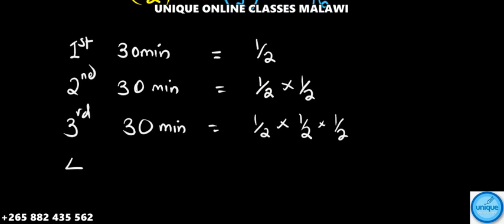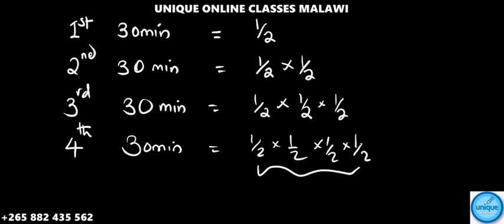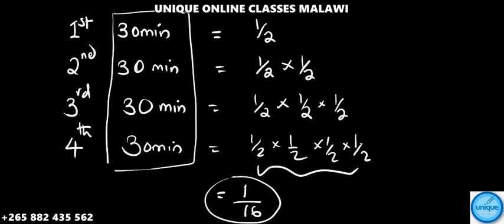After the fourth 30-minute interval — at 120 minutes — we have (1/2) × (1/2) × (1/2) × (1/2). Multiplying out: 2 × 2 = 4, × 2 = 8, × 2 = 16 in the denominator. So after 120 minutes, you get one over sixteen — the same answer as before.